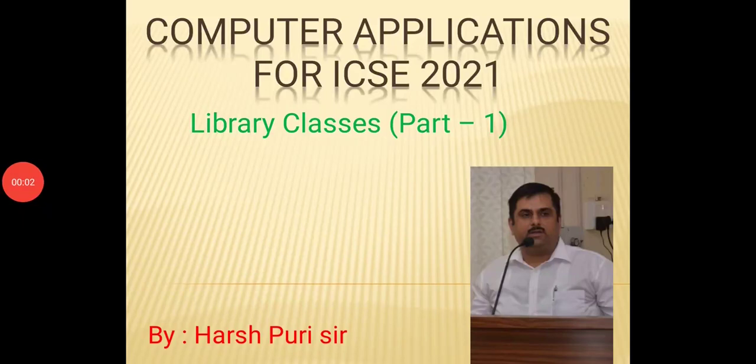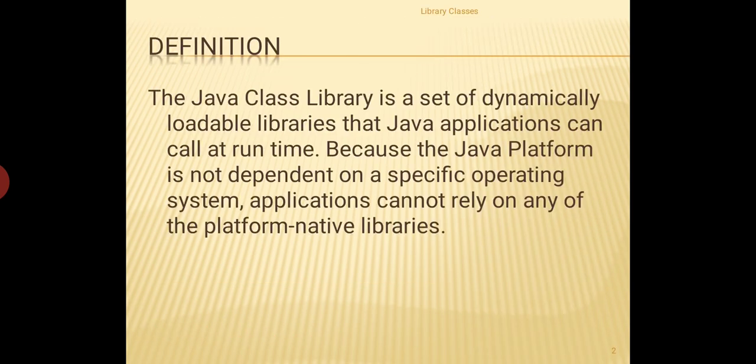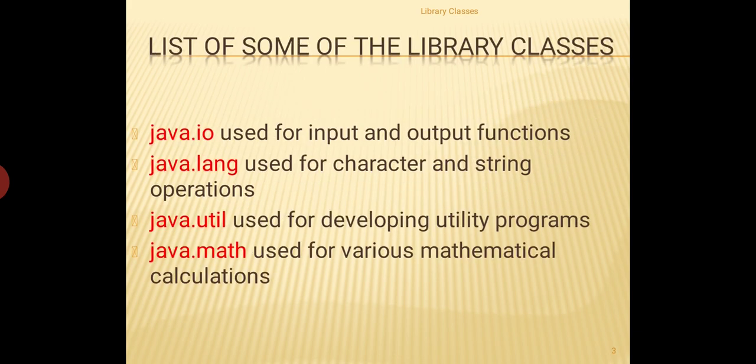Hello students and welcome to my next series of videos which are based on library classes. A library is basically a set of executable files which can be used for different purposes. In Java, since Java is a platform independent language, it can work on different operating systems. So platform-specific applications cannot be relied upon, and Java has its own set of library classes.